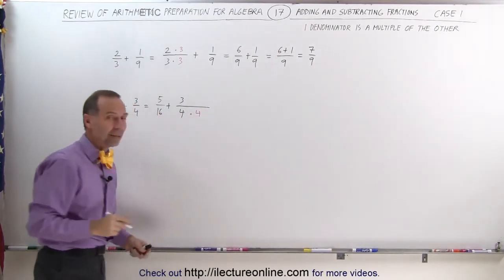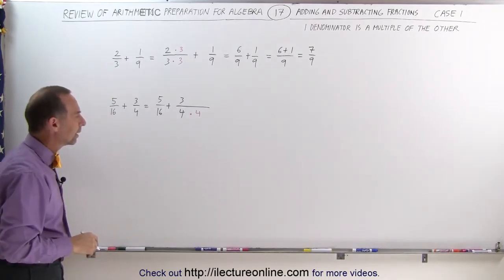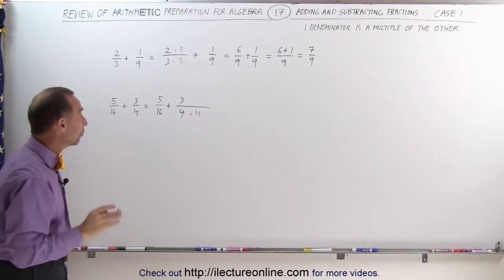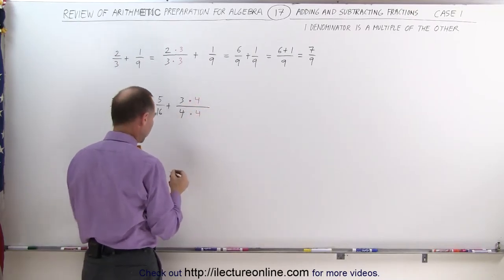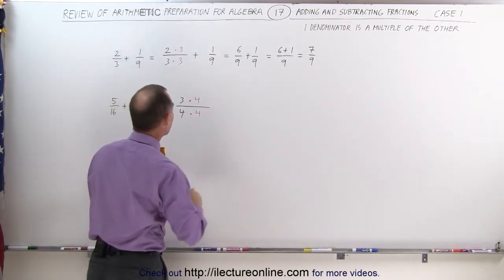I'm going to multiply this denominator times 4 because 4 times 4 is 16. That will make the two denominators the same or common. Again, if I do that to the denominator, I must do exactly the same to the numerator. I must multiply the numerator also times 4.